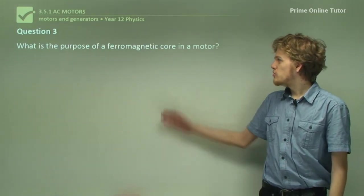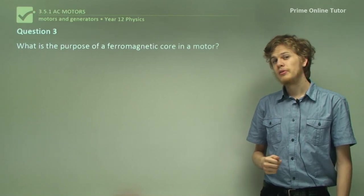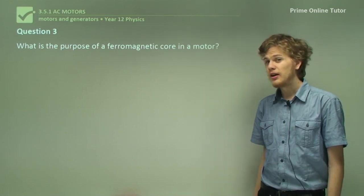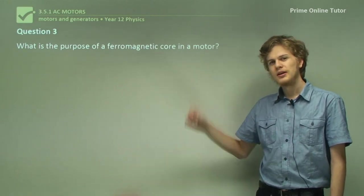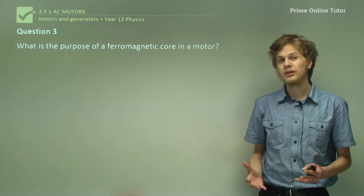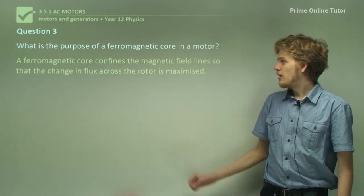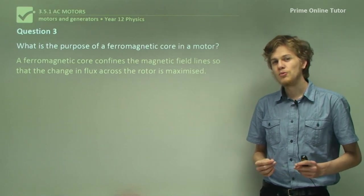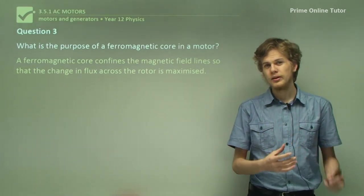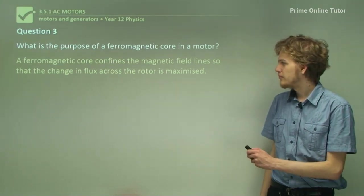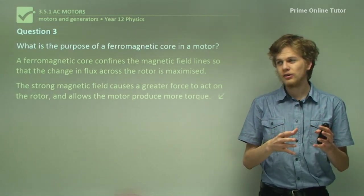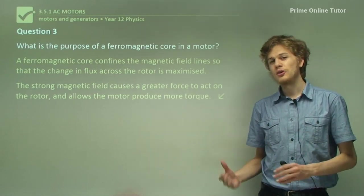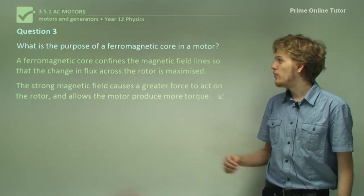Question 3: What is the purpose of a ferromagnetic core in a motor? Ferromagnetic materials are very permeable to magnetic fields, so a ferromagnetic core confines the magnetic field so that the change in flux across the motor is maximized. We won't get any change in flux around areas just outside the rotor. The strong magnetic field confined by the ferromagnetic core allows a greater force to act on the rotor, meaning the motor can produce more torque and drive a heavier load than if it had no ferromagnetic core.